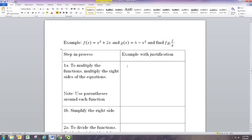So let's find out what f times g is. We're going to want to use the right sides of the equations. We're going to want to put those in parentheses so we know to distribute things correctly. And that's it. That's f times g.